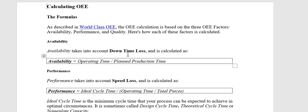Hello friends. In this video I will tell you how to calculate Overall Equipment Efficiency (OEE). This is most important for industries as well as machine performance. We will calculate it step by step. There are three parameters: the first is Availability, the second is Performance, and the third is Quality. We will discuss each one and then calculate OEE.